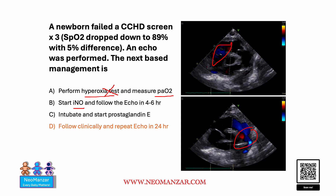Starting inhaled nitric oxide and following with echo is not needed, because the tricuspid regurgitation is very mild and we just have to observe. Intubating and starting prostaglandin E is also not indicated — prostaglandin E for a bi-directional PDA is not really indicated unless the patient is in failure or you need to keep the PDA open for other reasons.